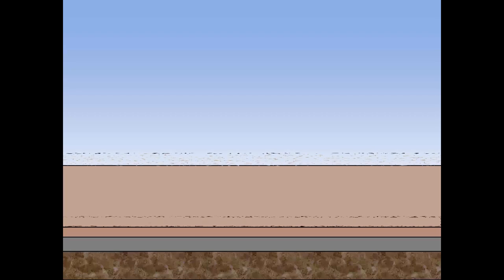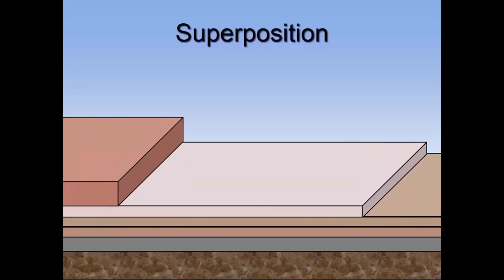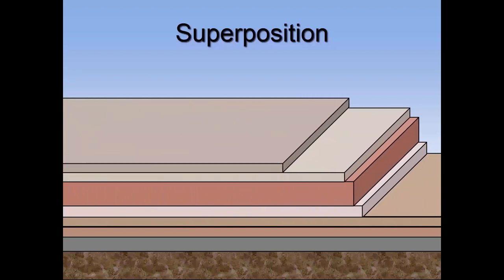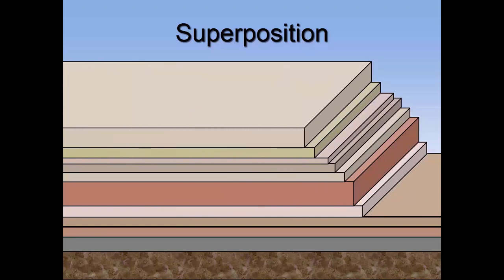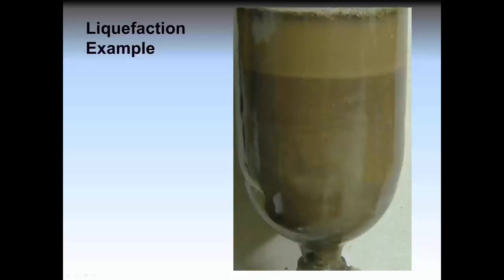The geological principle of superposition assumes the simplified logic that layers are formed individually over time, one on top of the other; therefore deep layers are older than shallow layers. Not being presented with any alternatives, it is easy to become convinced that this must be a law of science as stable as gravitation. However, many are not aware of a very real mechanism caused by gravitation acting on particles in a fluid or fluid-like state — the mechanism is liquefaction. Liquefaction of a soil will produce many layers all at the same time.